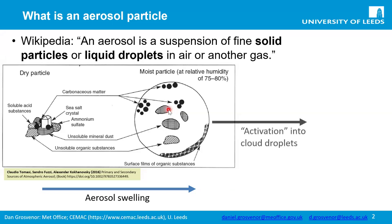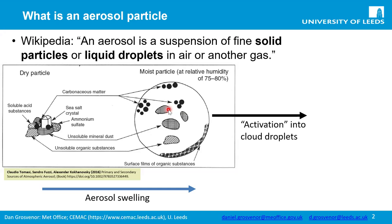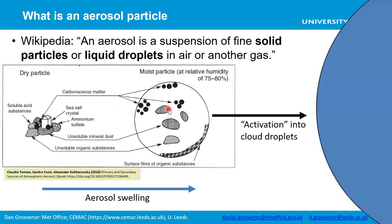As relative humidity increases further, over 100%, some aerosols can activate into droplets — that's a very large aerosol. A lot of the larger aerosols tend to activate more readily. Once they reach a critical threshold size, they tend to take on more and more water, become unstable, and grow into droplets. These are important for climate effects.